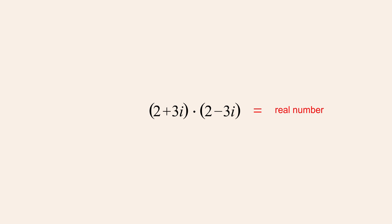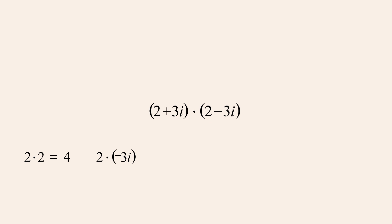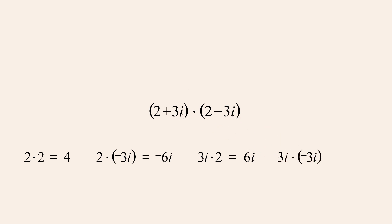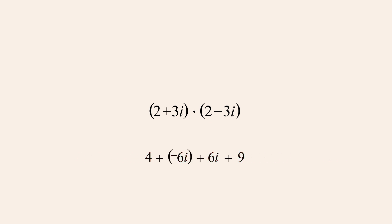For example, let's use the distributive property to multiply two plus three i by its complex conjugate two minus three i. Two times two is four. Two times negative three i is negative six i. Three i times two is six i, and three i times negative three i is negative nine i-squared. And since i-squared is negative one, negative nine i-squared is negative nine times negative one, or positive nine. Adding these results, negative six i plus six i is zero, leaving four plus nine, or thirteen.